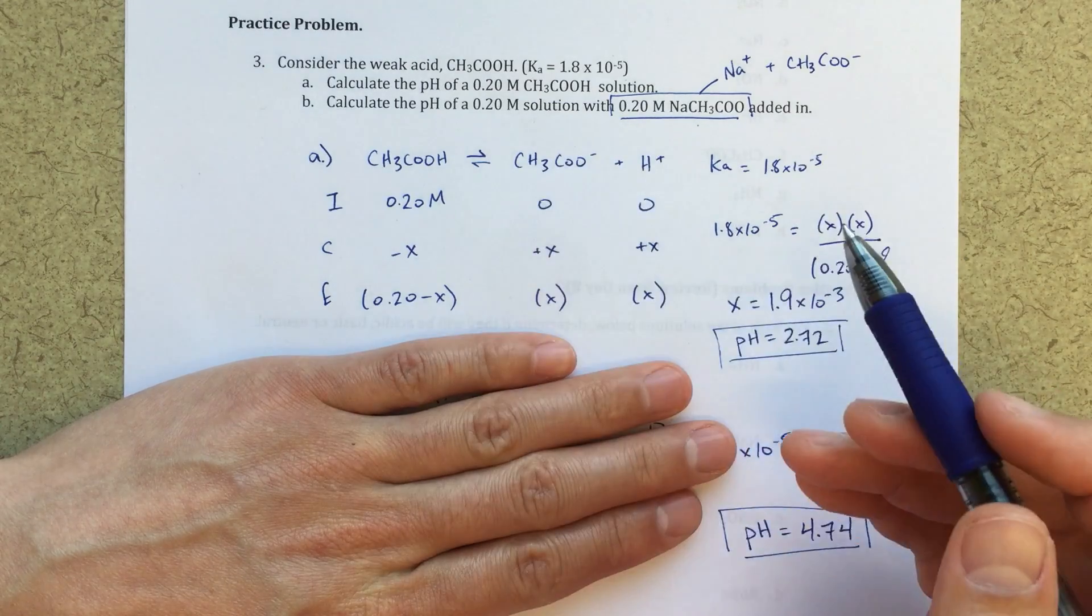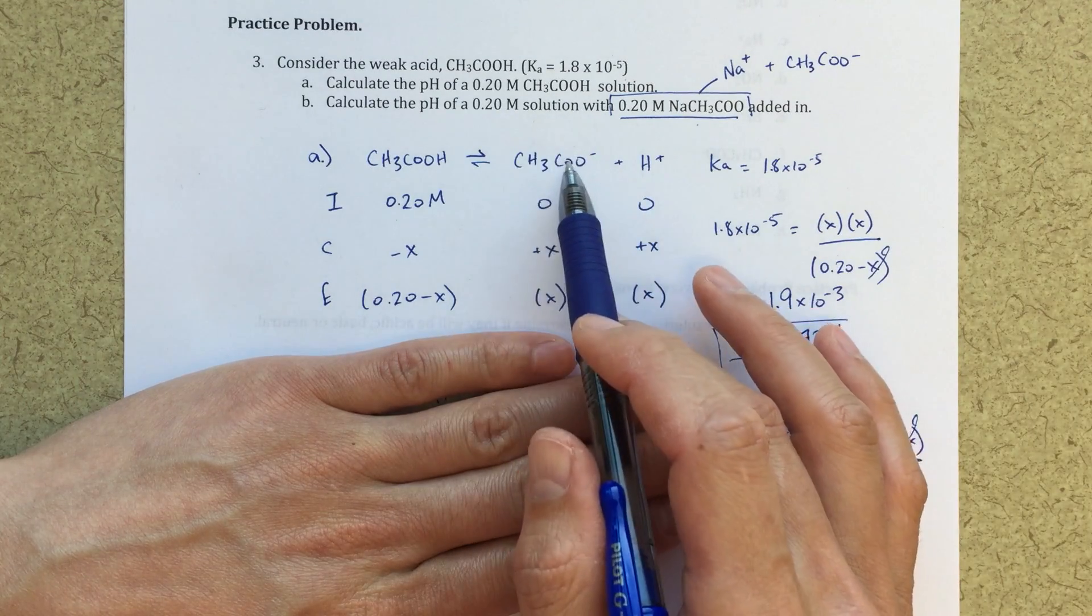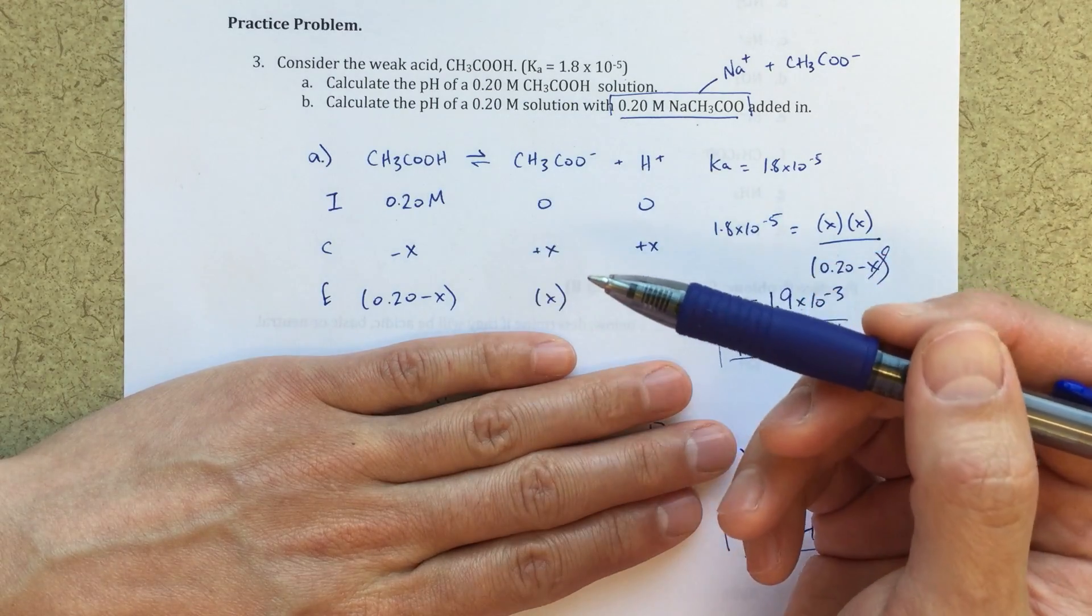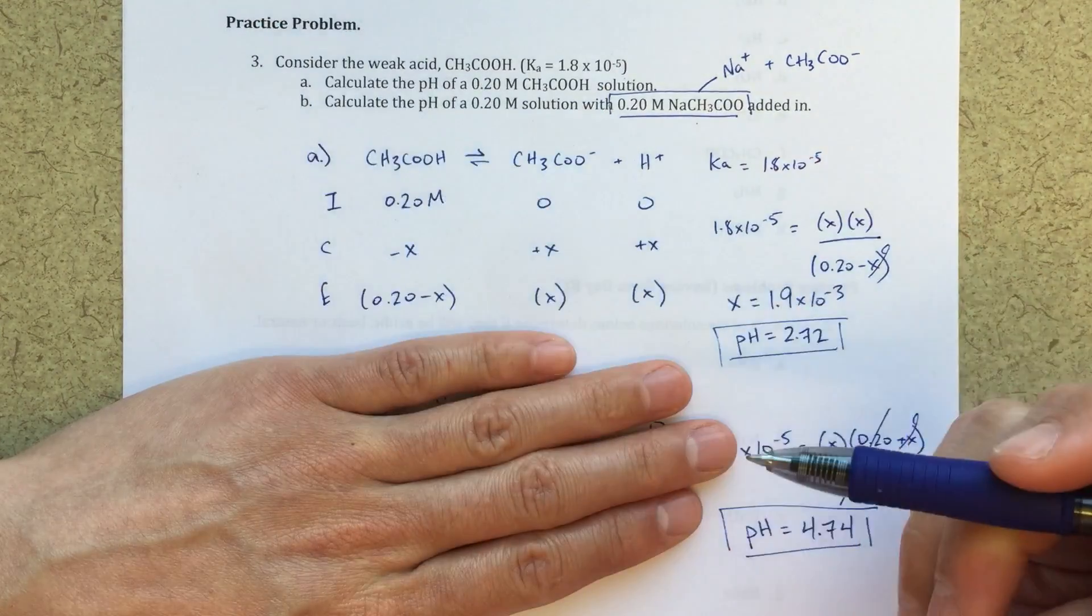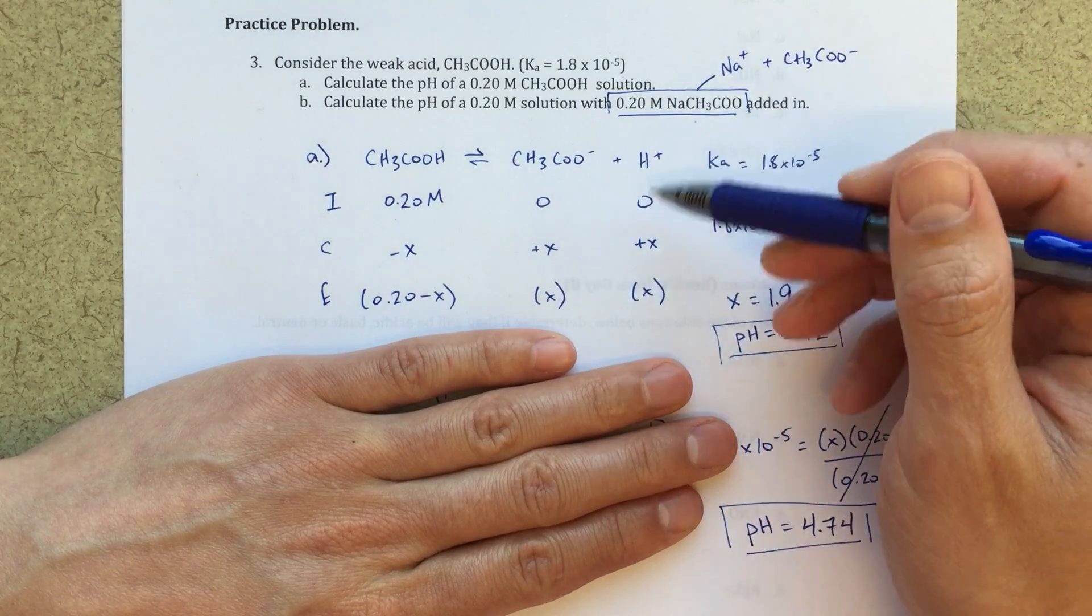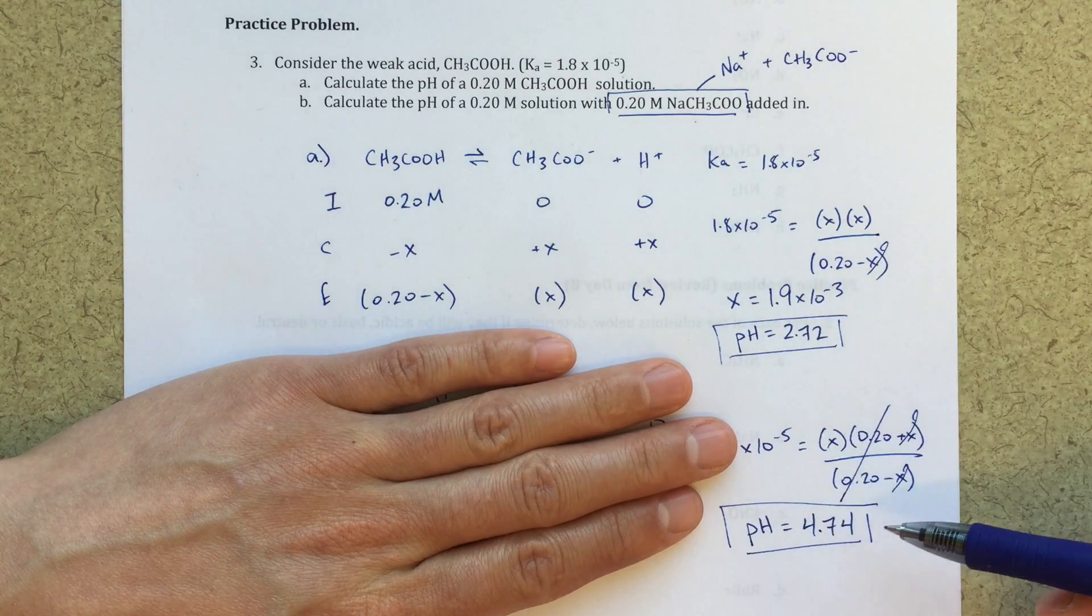Now, if I add in, if I externally add in more of this CH3COO minus, the net effect is going to be that this reaction is going to shift a little bit back to the left. That equilibrium will shift back to the left a little bit. My concentration of H plus will go down. I'll have less H plus. If my concentration of H plus goes down, my pH should be higher.